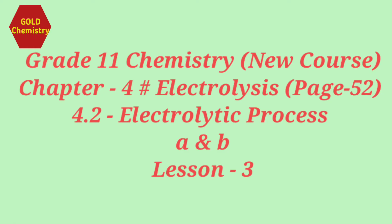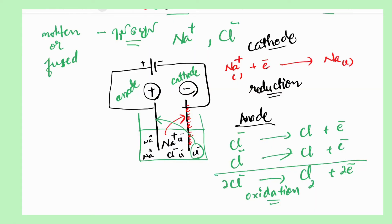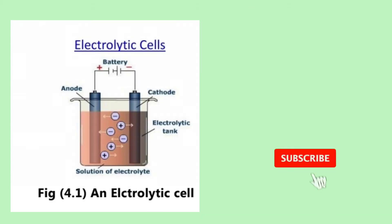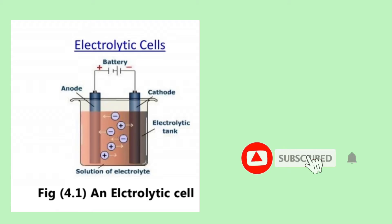Hello everyone, how are you today? Grade 11 Chemistry Theory, Chapter 4, Section 4.2: Electrolytic Process. We will be looking at the electrolytic cell.